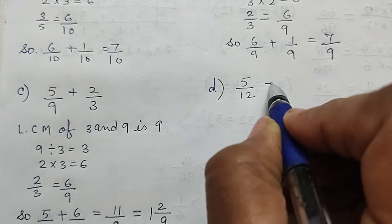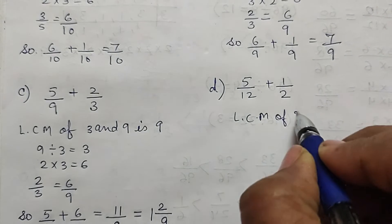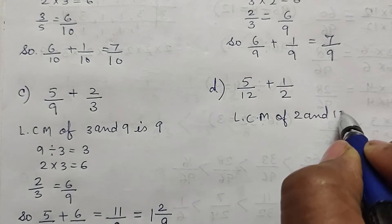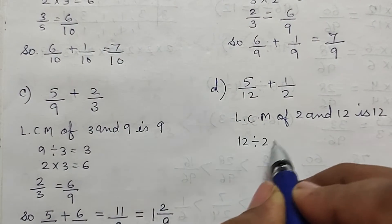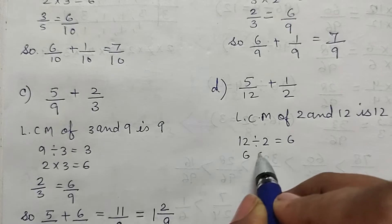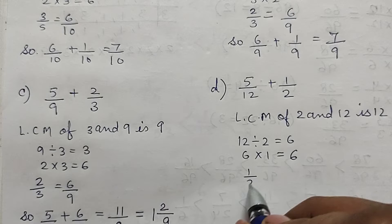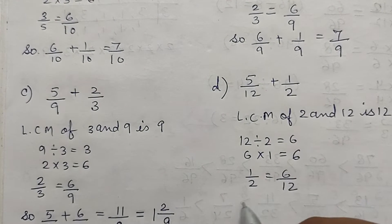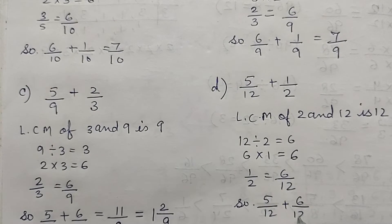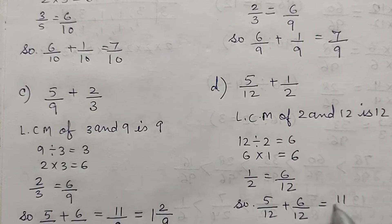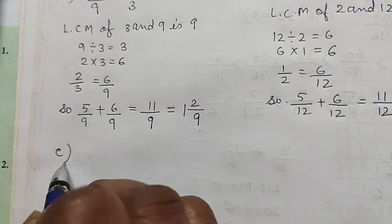Part d: 5/12 plus 1/2. LCM of 2 and 12 is 12. So 12 divided by 2 is equal to 6, and 6 multiplied by 1 is equal to 6. So 1/2 is equal to 6/12. Therefore 5/12 plus 6/12 is equal to 11/12.